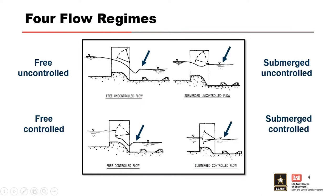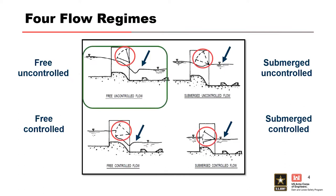The discharge for an uncontrolled flow regime is not affected by the spillway gates or any other obstruction to flow, whereas discharge for a controlled flow regime is reduced when the spillway gates are in the water. These pictures hopefully explain what those names are referring to. In this presentation, we're going to focus on the two types of flow regimes common for high head dams: free uncontrolled flow and free controlled flow.